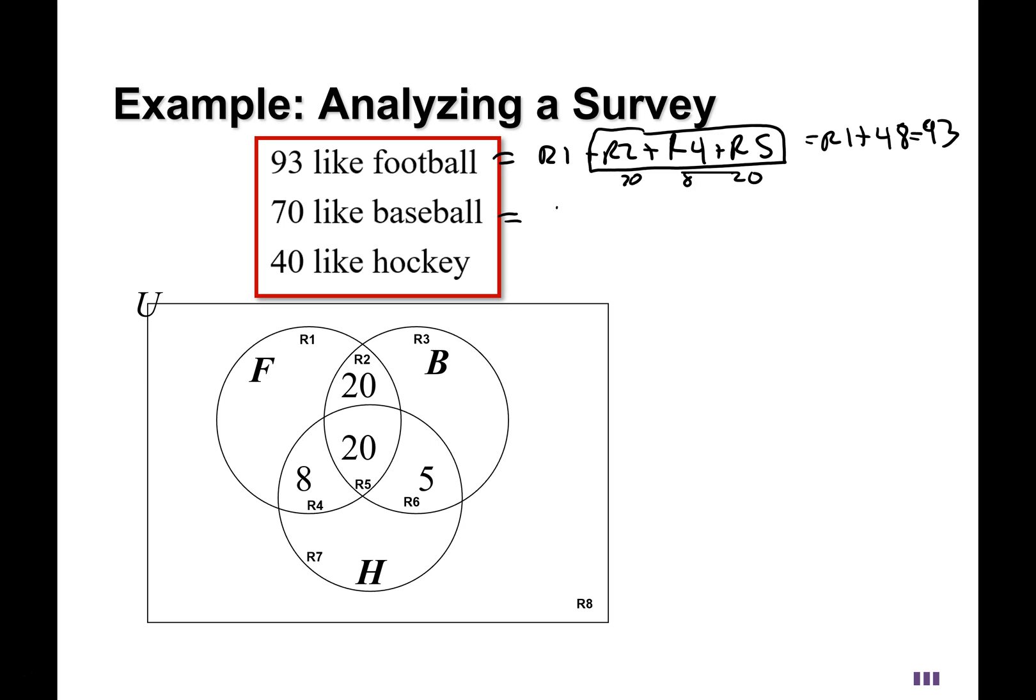The baseball circle, made up of region 3, and region 2, and region 5, and region 6. But we know 2, 5, and 6 already: 20, 20, and 5. Those add up to 45. So region 3 plus 45 should be the 70.